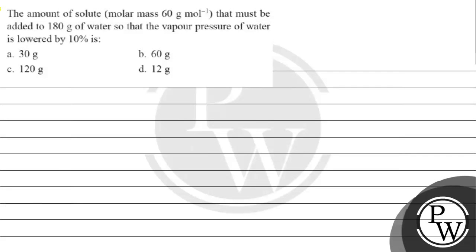Let's read this question. The amount of solute with molar mass 60 gram per mole that must be added to 180 gram of water so that the vapor pressure of water is lowered by 10% is: option A 30 gram, option B 60 gram, option C 120 gram, option D 12 gram.